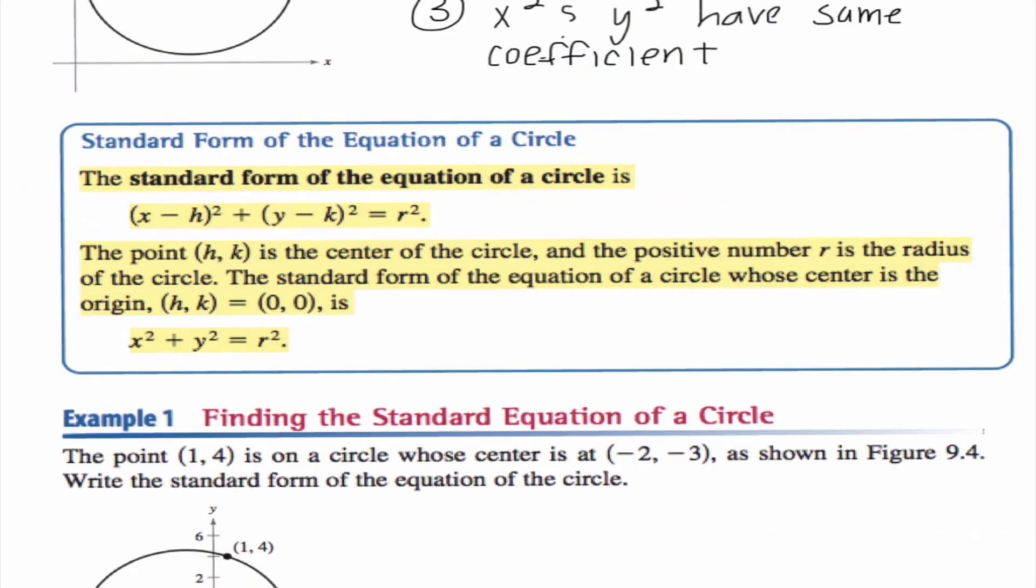The standard form of the equation of a circle is (x - h)² + (y - k)² = r². When we're dealing with this, the center is (h, k), which are going to be the opposite of these two values, and our radius is the square root of r squared.